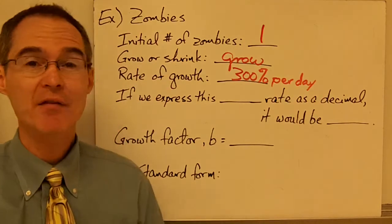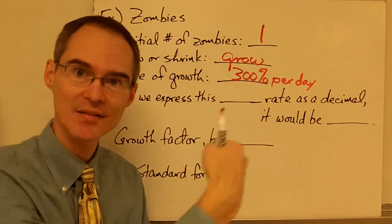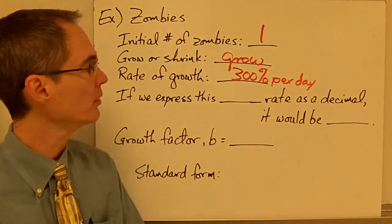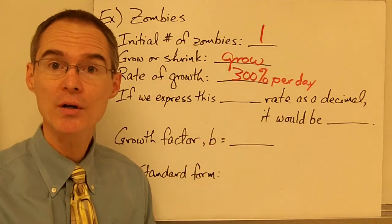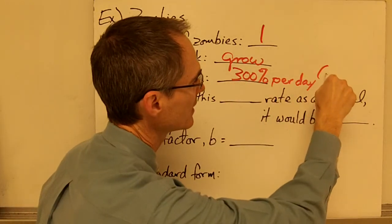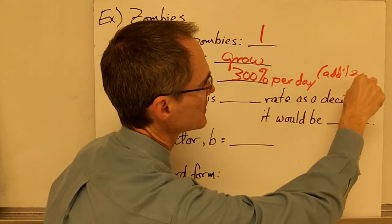In other words, however many zombies I have today, the number of new zombies that I get the next day, since every one of my current zombies is going to bite three people, I'm going to end up with 300% more zombies the next day than I have today. All right, notice in this one we're talking about additional zombies.